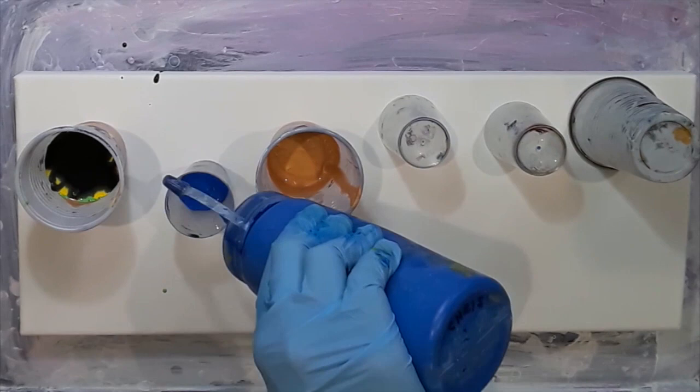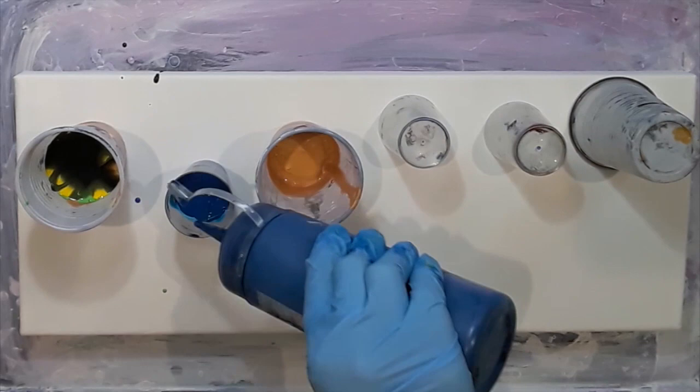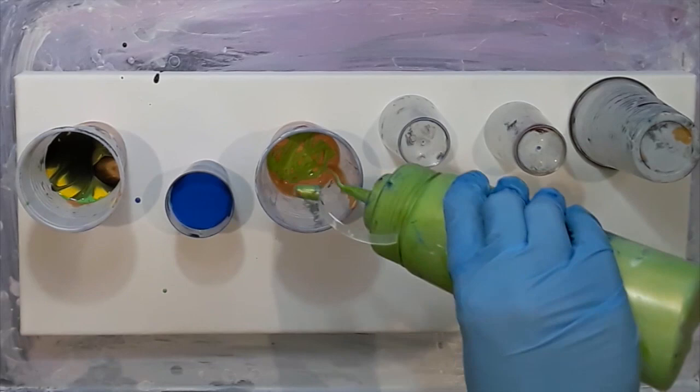Then I went into a blue so phthalo blue, turquoise which is a blue green iridescent color, prussian blue and then phthalo blue.